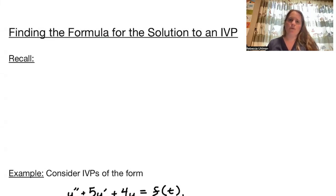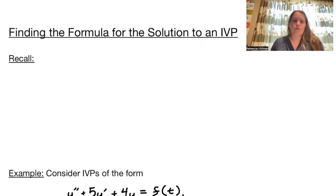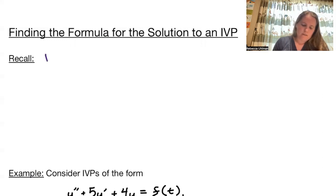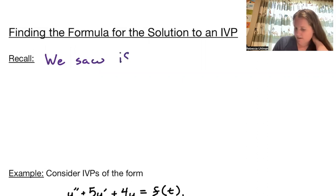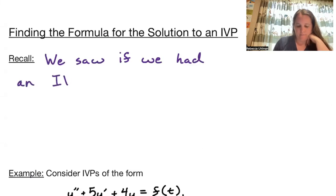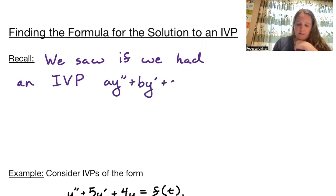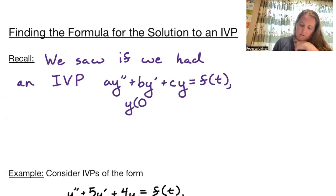Welcome to finding the formula for the solution to an IVP. Recall in the first video that involved convolutions in part one of section 8.6, we saw that if we had an IVP: a·y'' + b·y' + c·y = f(t) with initial conditions y(0) = 0 and y'(0) = 0.